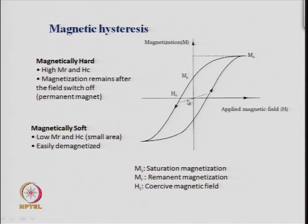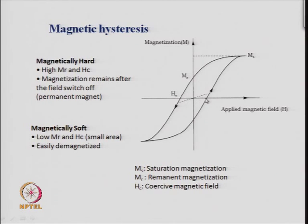If you then change the magnetic field in the opposite direction — increasing it in the negative direction — the magnetization decreases further until it reaches the x-axis. The field applied in the opposite direction at which the net magnetization goes to zero is called H_c, the coercive field.